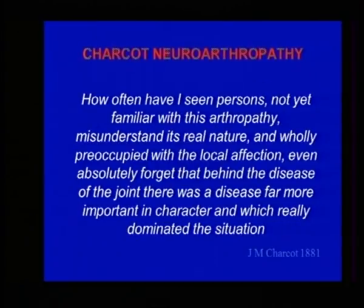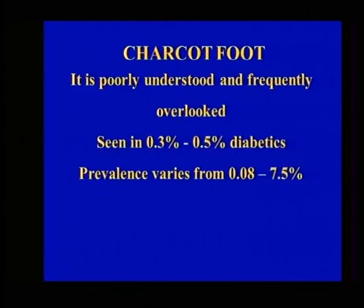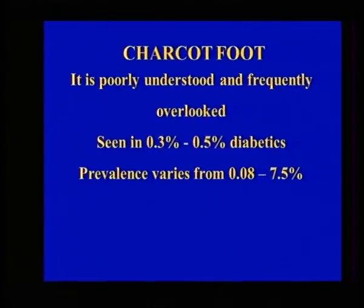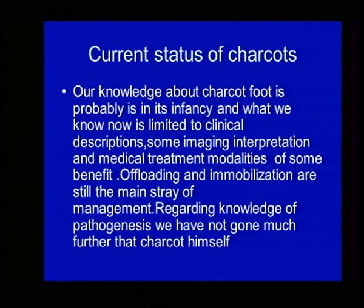It was for tabes dorsalis but with the same pathology. Now the incidence of Charcot in India changes depending on where you are getting data, but on average about 7.5% is the highest figure seen of all diabetes patients. When we think of millions of patients — like 70 million — it's a large number. What is the current status of our knowledge about Charcot? It is still in its infancy. We really don't know why Charcot occurs.